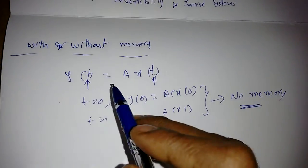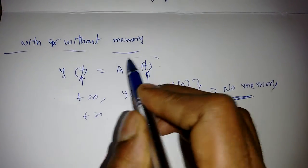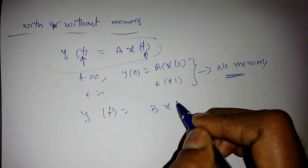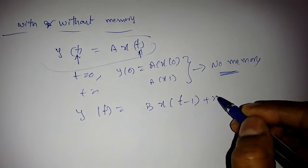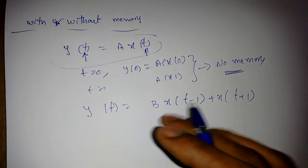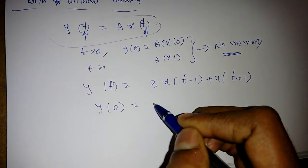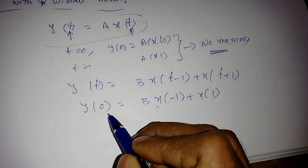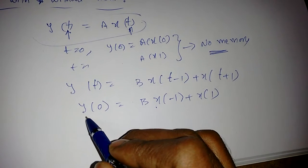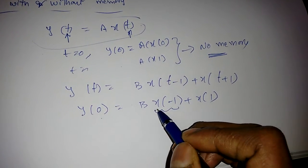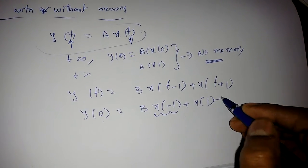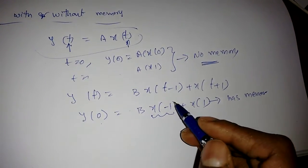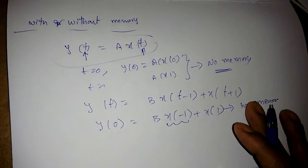When you see only the same time index t, you can easily identify the system has no memory. Now suppose y(t) = b·x(t-1) + x(t+1). Substituting t=0: y(0) = b·x(-1) + x(1). To get the output at t=0, we need inputs at t=-1 and t=+1, so the system has memory.